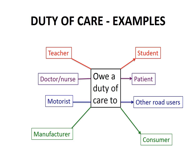On this slide I've set out a number of examples of where one person owes a duty of care to another. A teacher owes a duty of care to a student because if the teacher doesn't teach the student properly, it is reasonably foreseeable — that is, predictable — that the student will suffer loss. For example, if I taught you the wrong curriculum, it is reasonably foreseeable that you would suffer loss by failing your end of year exams. A doctor or nurse owes a duty of care to their patient.